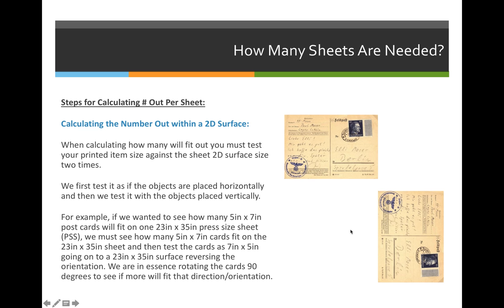When we calculate the number out or the number of items that will fit on one press size sheet, we need to take into account whether we place the item horizontally or vertically on our press sheet. There are times where you might want to put some horizontally and some vertically. It's called a dutch cut in the printing industry, but for our class we are never going to use dutch cut. We will either put all of the postcards or whatever printing horizontally or all of them vertically.